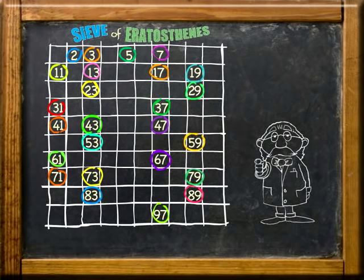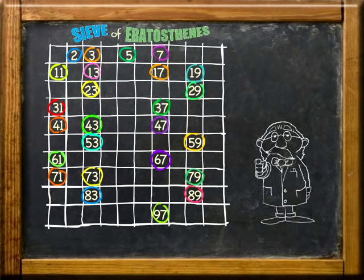So remember, in order to find a number that is not prime, try to see if it is a multiple of another number. And as always, the Sieve of Eratosthenes is your safety net for prime numbers.